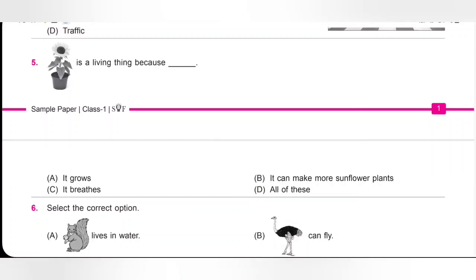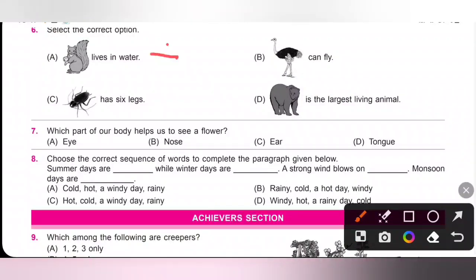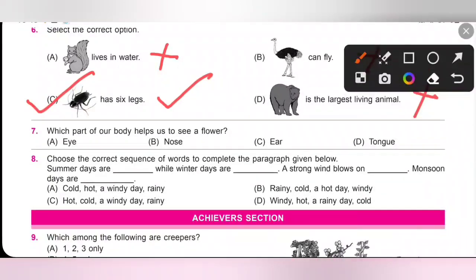Sixth one, select the correct option. Squirrel lives in water - incorrect. B, ostrich can fly - also incorrect because it is a flightless bird. Next, C, cockroach has six legs. Yes, cockroach is an insect, it has six legs. Next, bear is the largest living animal - also incorrect. So option C is the correct answer.